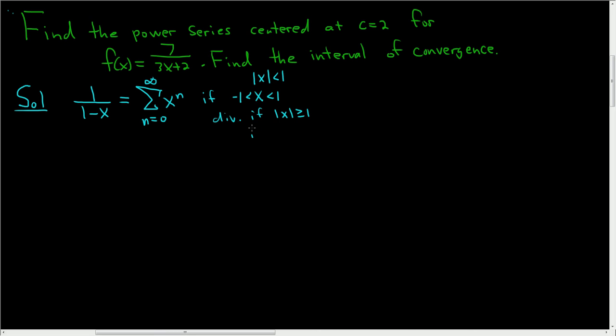In particular, it diverges if the absolute value of x is equal to 1. So that means it diverges if x is equal to plus or minus 1. Those are the endpoints. So this diverges at the endpoints. That's what matters for us in this problem.